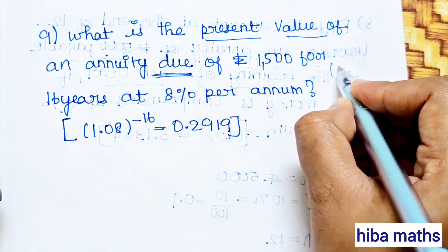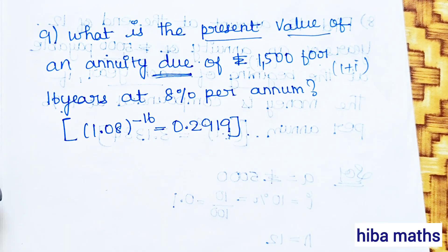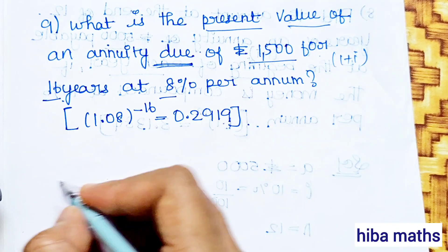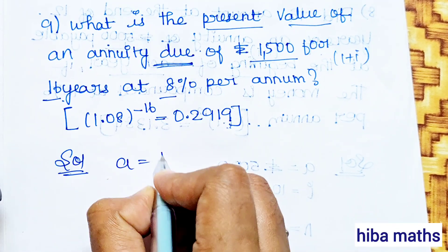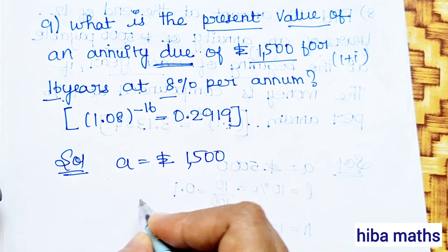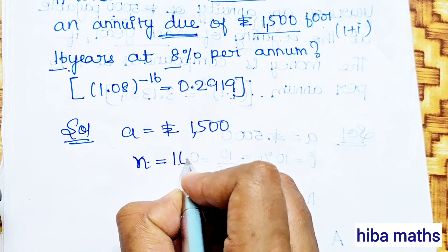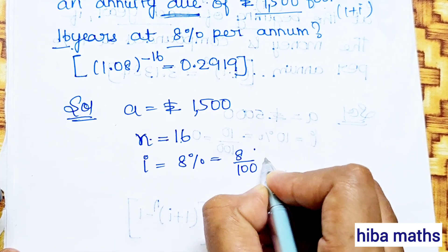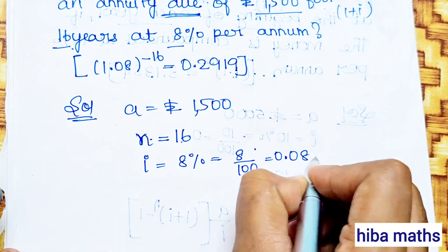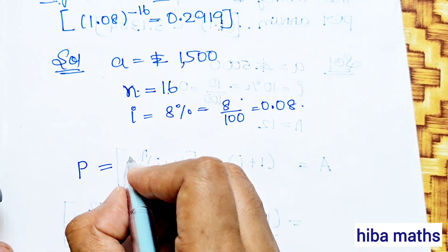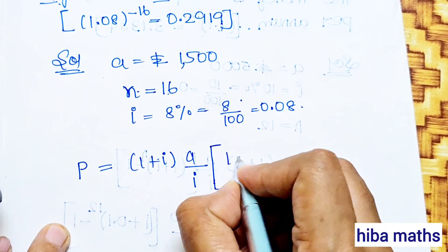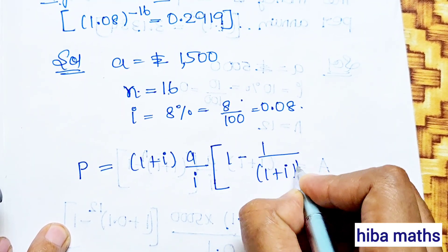This is the annuity due case. Now for a hint question: a is equal to Rs.1,500, n is equal to 16 years, i is equal to 8% = 8 by 100 = 0.08. The present value formula for annuity due is: (1 plus i) into a by i into 1 minus 1 by (1 plus i power n).